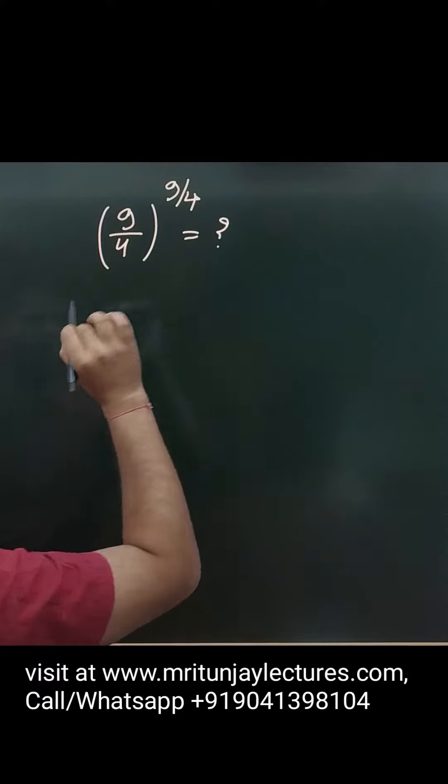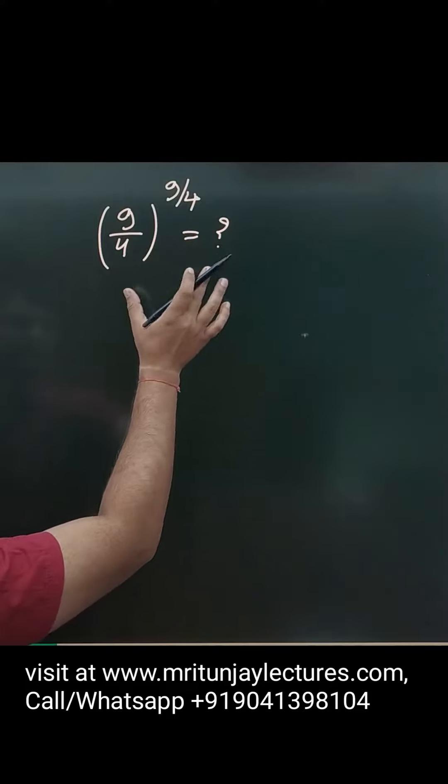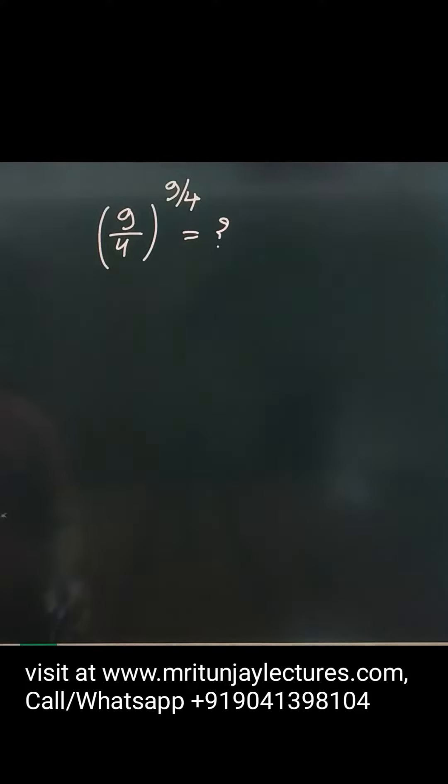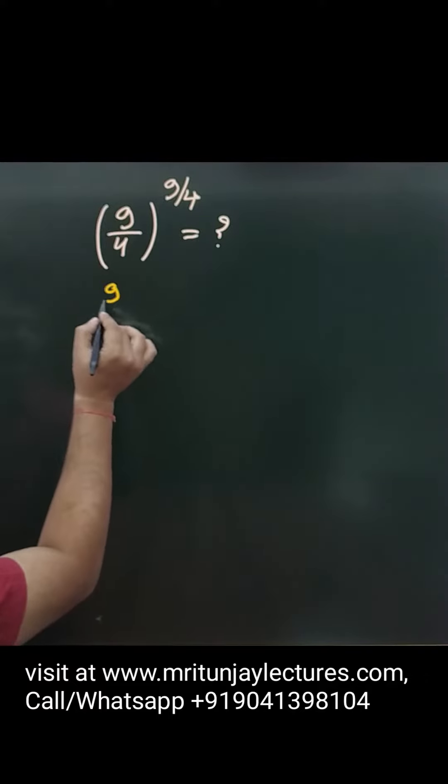What about that value? Question of the day: 9 by 4 to the whole power 9 by 4. Then what about that value? Simply you can say that, how can we do? 9 to that one written 9 by 4.